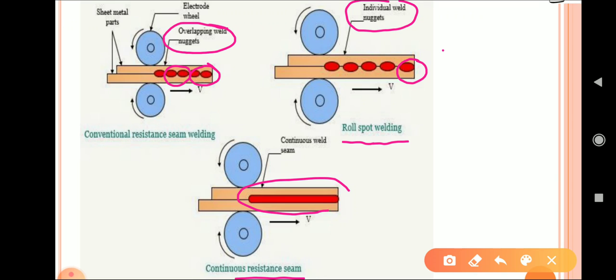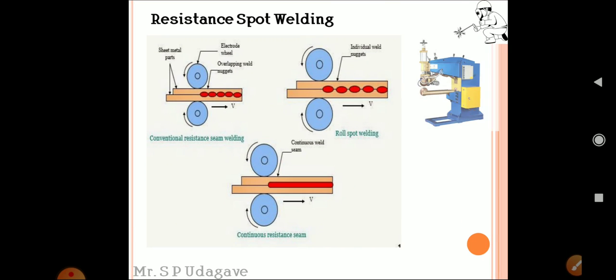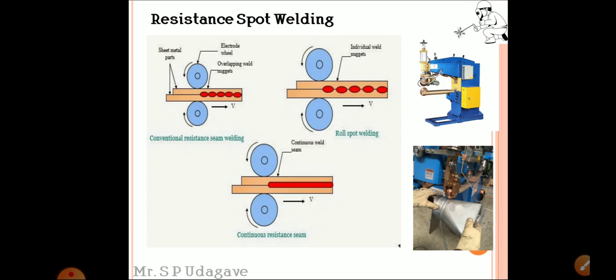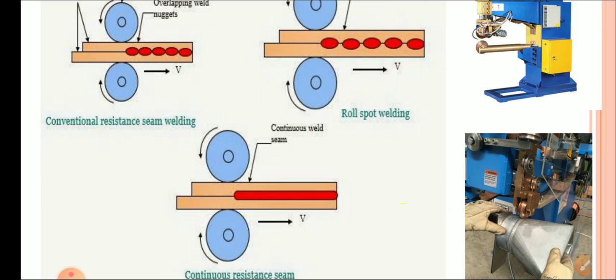In the last one, continuous resistance seam, you can see continuously we provide seam weld through continuous contact between the wheels. These are actual machine figures and actual working applications for industrial use.